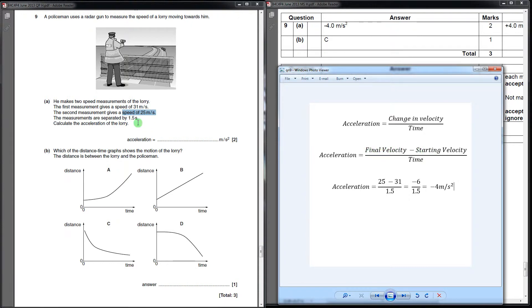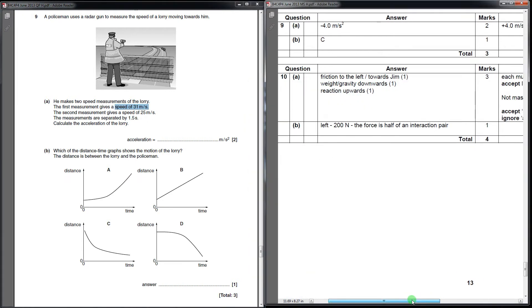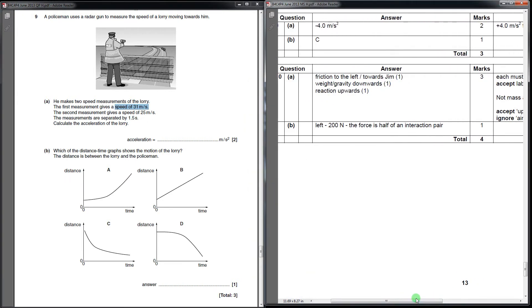The final velocity he measures is the second measurement, so 25 goes in for final velocity. The starting velocity he measures is the first measurement, so 31 goes in for the starting velocity there. Final velocity 25, starting velocity 31, and the time on the bottom between them. When you do that, you get minus 6 over 1.5, and minus 4 metres per second squared for your acceleration. You've only got both marks if you put the minus. If you miss the minus out, then you only get one.